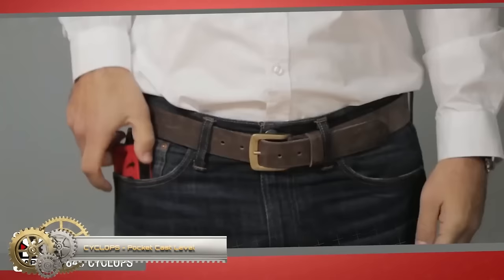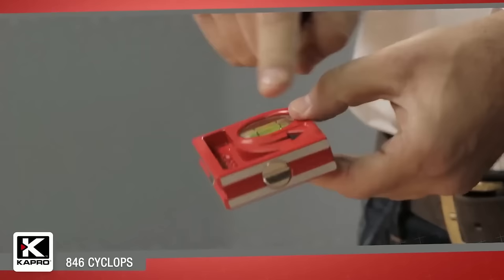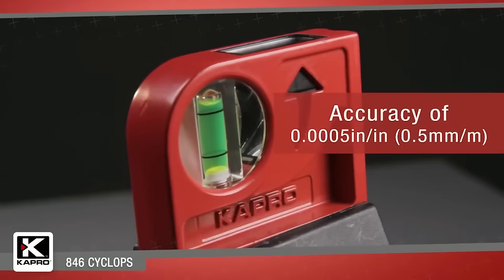The Cyclops pocket cast level is a compact and durable tool designed for portability and precision. With a plumb sight dual view vial, it offers easy and accurate vertical plumb line readings without requiring uncomfortable bending or neck twisting. This level also includes a V-groove for pipe leveling and a strong rare earth magnetic base for secure attachment to metal surfaces. Its benefits are multi-fold, including its compact and lightweight design for easy portability, exceptional accuracy with the plumb sight dual view vial, durable cast aluminum construction that withstands impacts, and versatility for leveling pipes and attaching to metal surfaces with its magnetic base. The Cyclops pocket cast level is a handy tool suitable for various applications, whether in your pocket or toolbox.